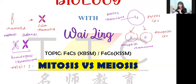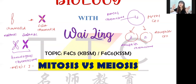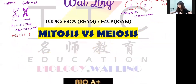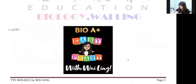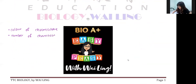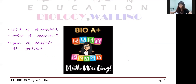Now that you know the labeling, let's cover the three methods to differentiate mitosis and meiosis - you can use these for all questions. The first method is based on the color of chromosome. The second method is based on the number of chromosomes in the parent cell and daughter cell. The third method is the number of daughter cells produced. These are the three things to take note when differentiating mitosis and meiosis.